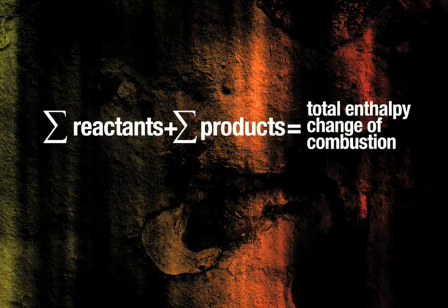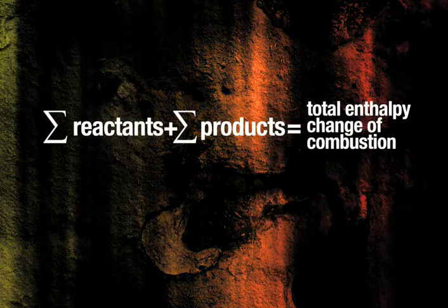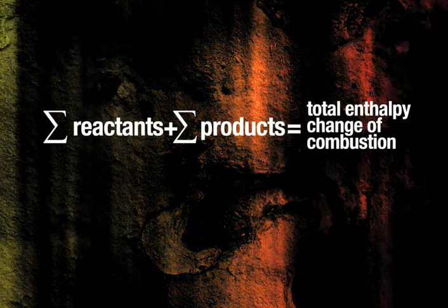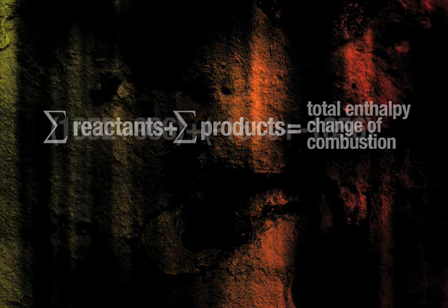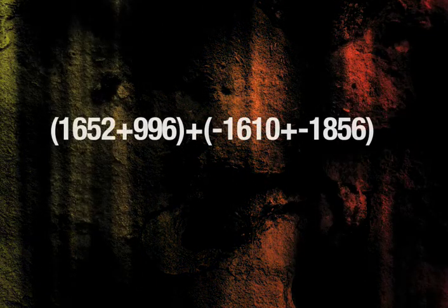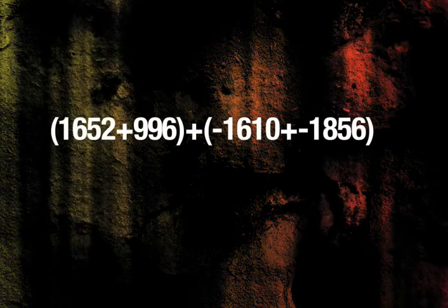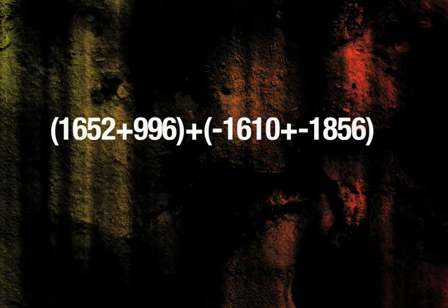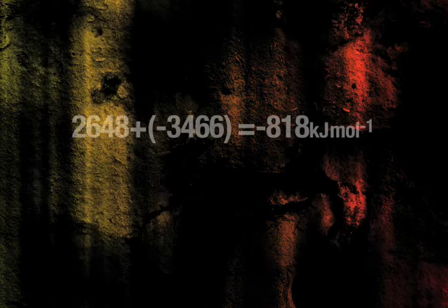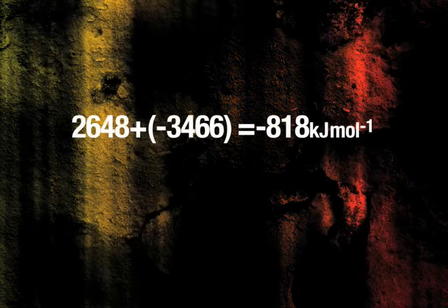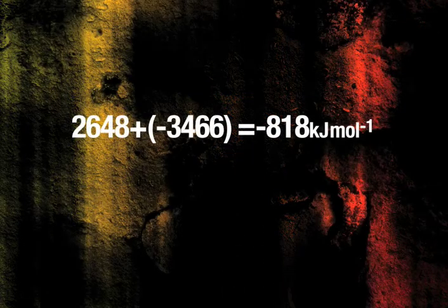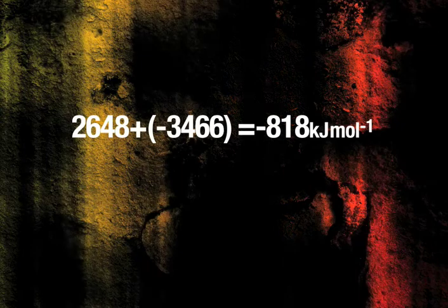The sum of the bond enthalpies of the reactants plus the sum of the products gives the total enthalpy change of combustion, with the products being exothermic. Therefore, the total enthalpy change of combustion is −818 kJ per mole.